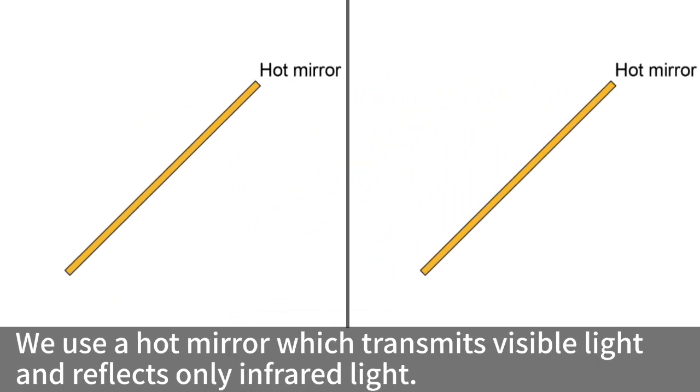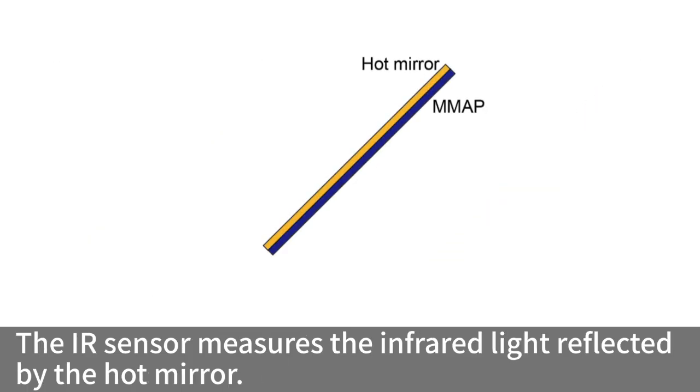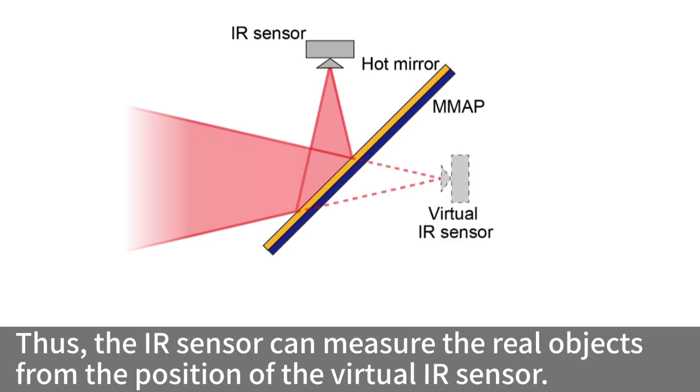We use a hot mirror which transmits visible light and reflects only infrared light. The IR sensor measures the infrared light reflected by the hot mirror. Thus, the IR sensor can measure the real objects from the position of the virtual IR sensor.